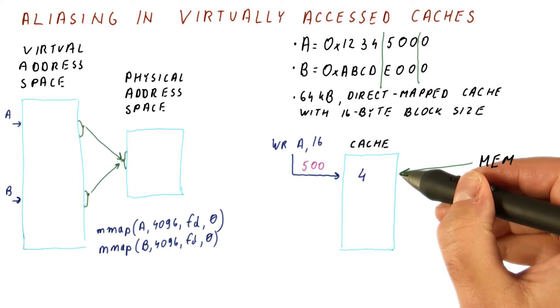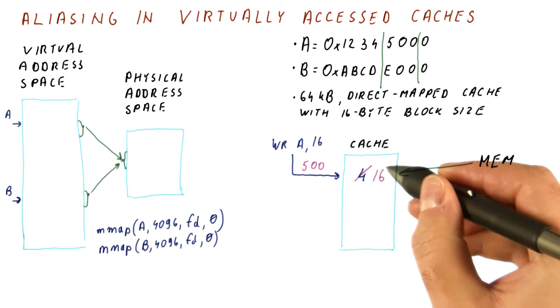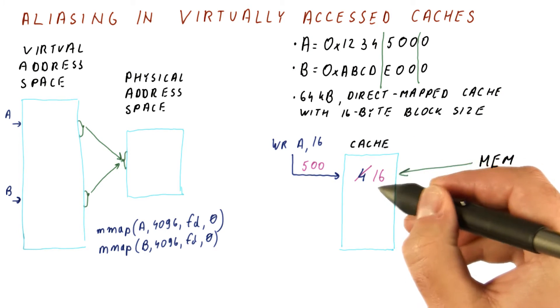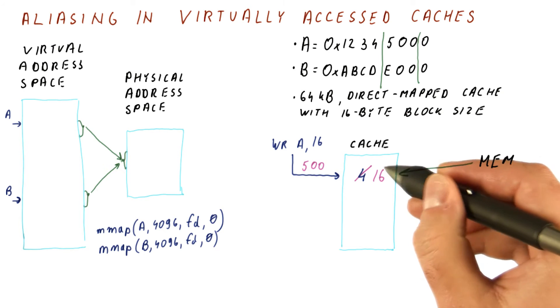Once we fetch the cache block, we now put 16 there. And the new content of the cache block is 16. Let's say this is a writeback cache, so this 16 just stays there.